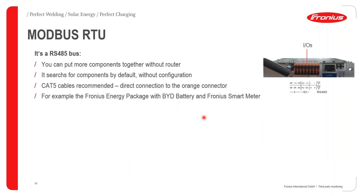Looking at the features of our Modbus RTU: it communicates via the RS-485 communication bus. You can put multiple components together without necessarily using a router, and it searches for connected components by default without any necessary configuration. We recommend CAT5 and above cables and twisted pair wiring.